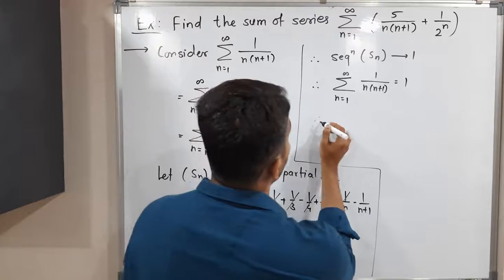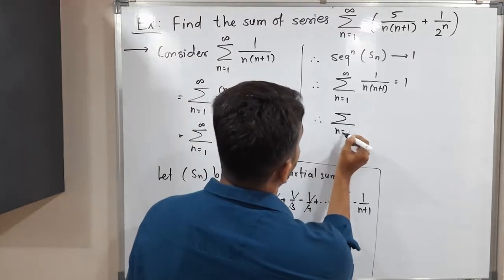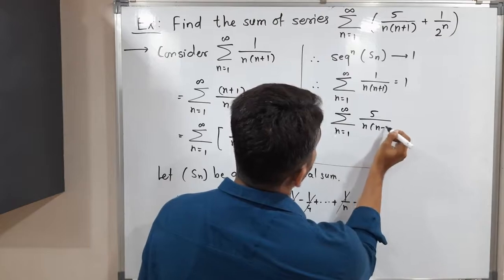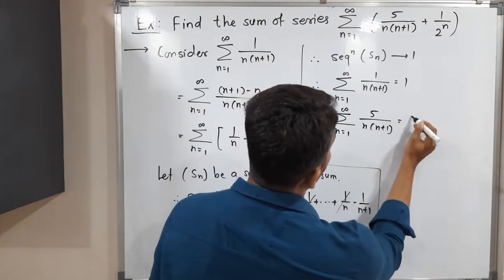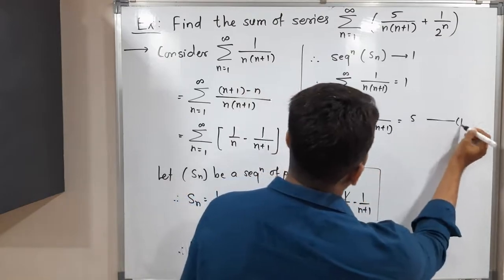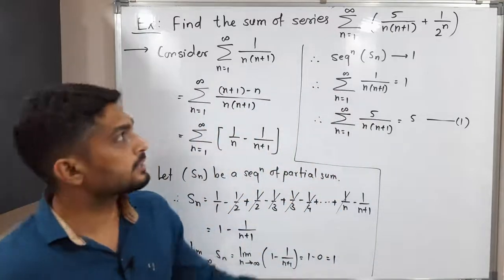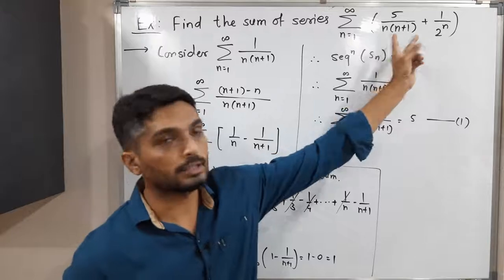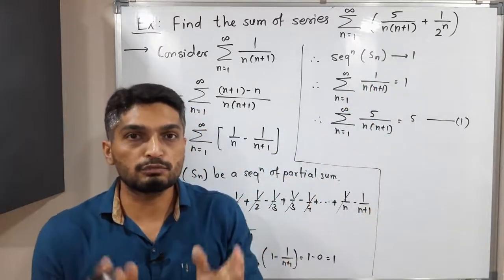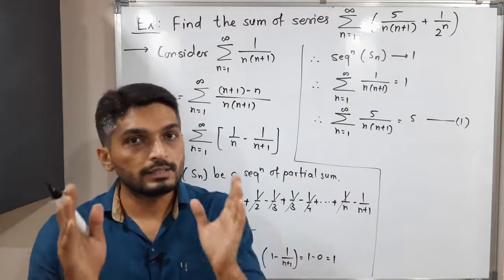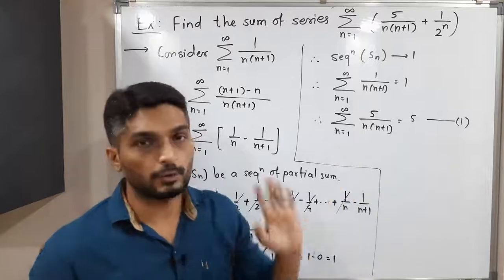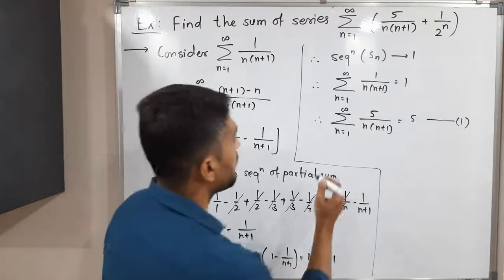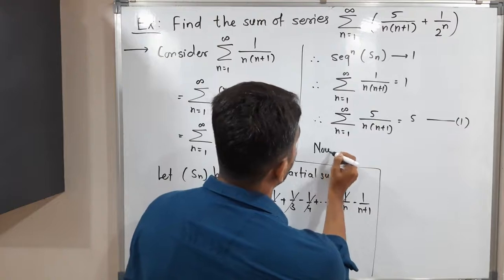Now we can multiply both sides by 5. Therefore summation n running from 1 to infinity of 5/(n(n+1)) equals 5 times 1, which is 5. So the sum of the first series is 5. Since the original expression is the sum of two terms, if we take separate summations we have two series, and the sum of the first series is 5.